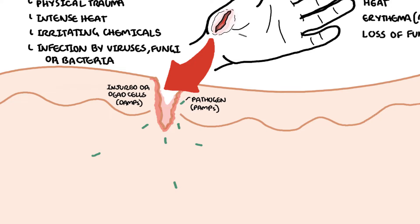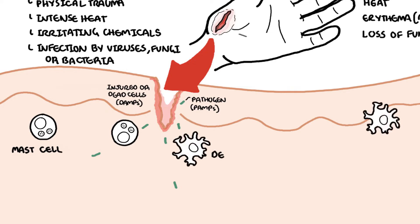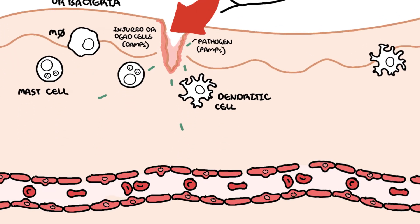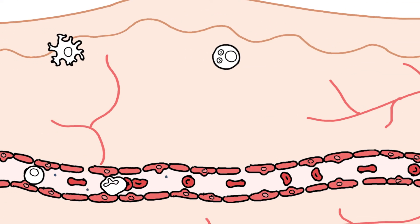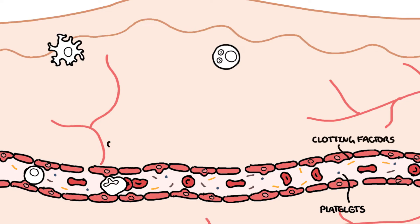The key players in the inflammatory response are mast cells; phagocytes in the area and in circulation, including dendritic cells and macrophages, monocytes and neutrophils, also known as polymorphonuclear leukocytes; endothelial cells around the site of injury, including the blood vessels; platelets and four plasma protein systems, including the clotting factors, complement proteins, the kinin system, and immunoglobulins, which I have not drawn here.